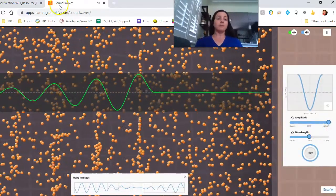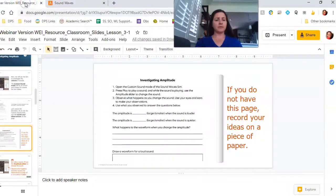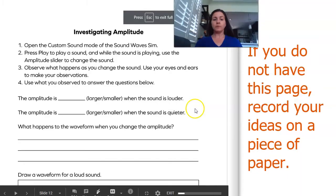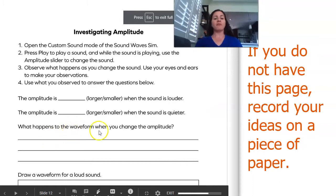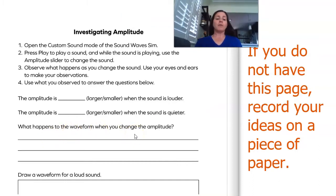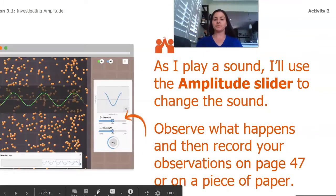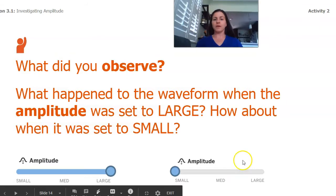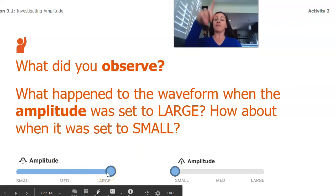So again, I see a pattern there. What happens to the waveform when I change the amplitude? Well, I saw a bigger amplitude meant like a taller squiggle. And then a smaller amplitude was a smaller squiggle. And so that's talking through what we observed. If you observed the same thing as me, you saw that when I brought the amplitude up, that wave got bigger. When I brought the amplitude down, that wave got smaller.